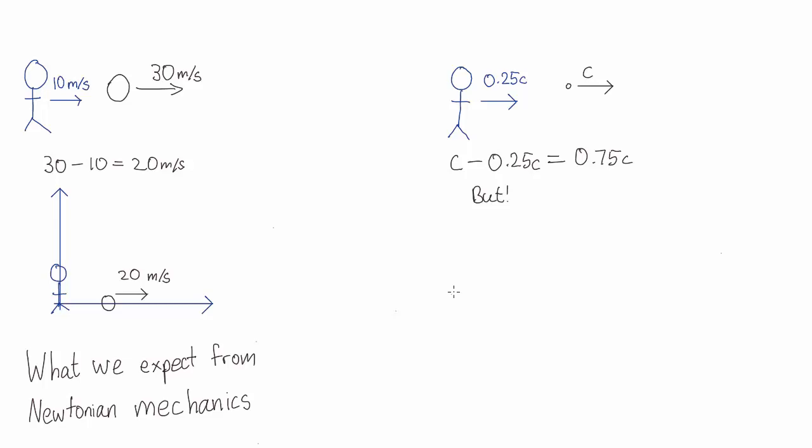However, the second postulate says that in Bob's reference frame, the photon will still be moving away from him at the speed of light. Despite the fact that I see Bob running towards it at a quarter the speed of light, he will still measure that photon as moving away from him at c, the full speed of light.